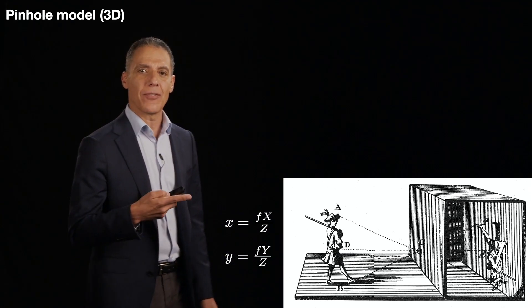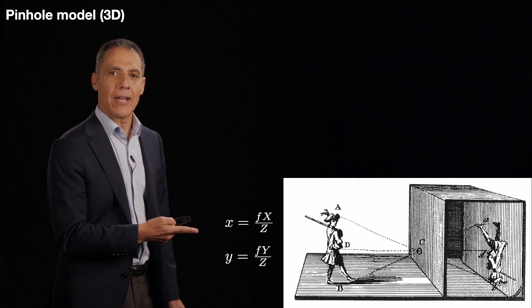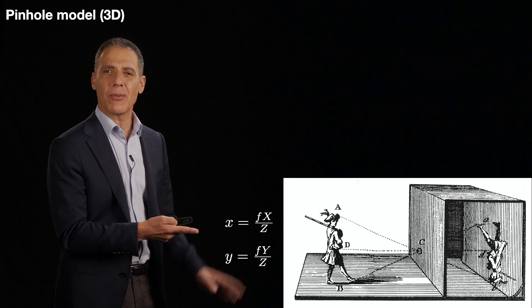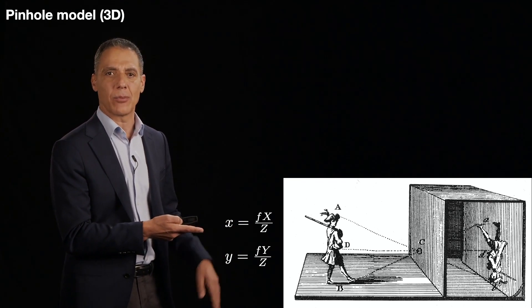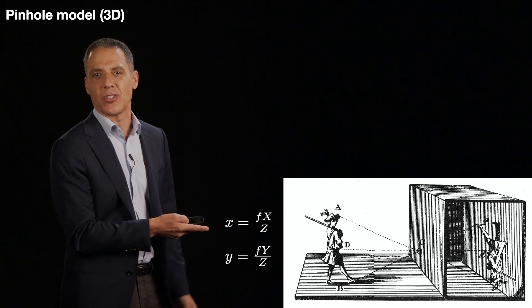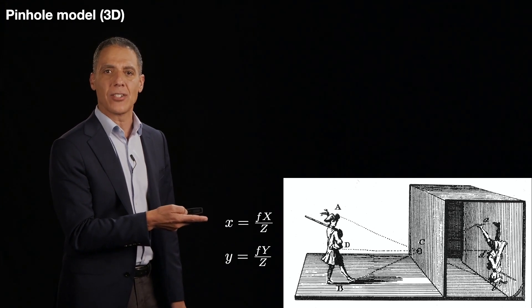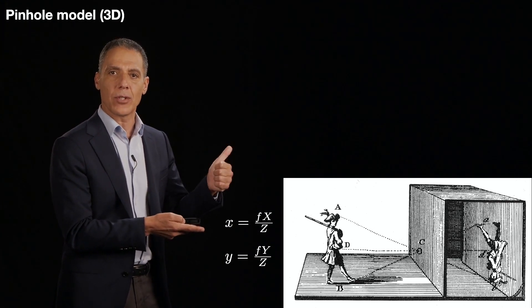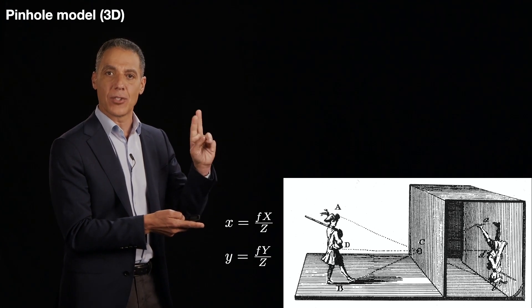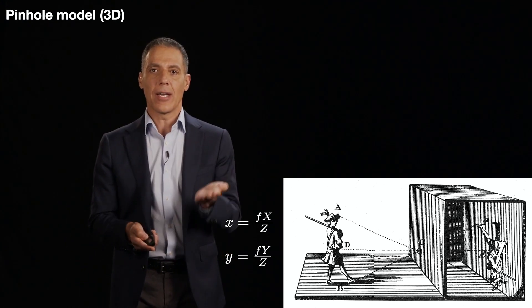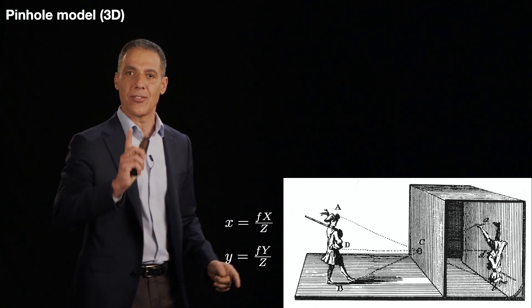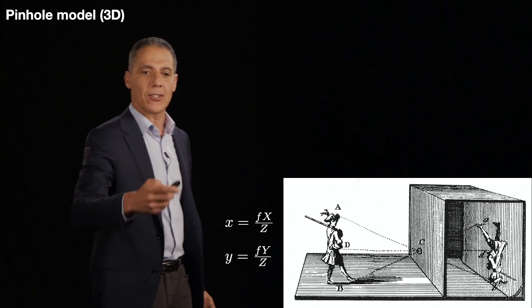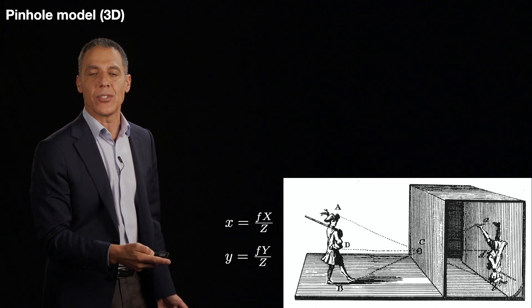So let me just remind you, we've got the camera model over here, and I'm going to ignore the negative signs for now. We're going to stick with the positive version because that's what the image looks like. I have little x is equal to fx over z. f is the focal length, x, z are the two coordinates, how much it's moved in the x direction and in the z direction, which is along the optical axis, and y is just fy over z.